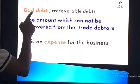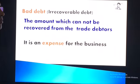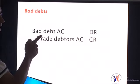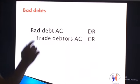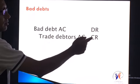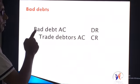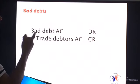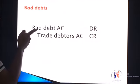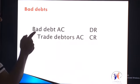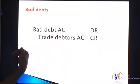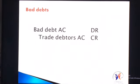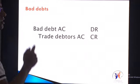The double entry for bad debts: the bad debts account is debited because it is an expense, and the trade debtors account is credited because the amount is deducted from debtors. Expense accounts have a debit balance, and increasing expenses requires a debit. Debtors are an asset — since the asset value decreases, the debtors account is credited. So: bad debts account debited, trade debtors account credited.